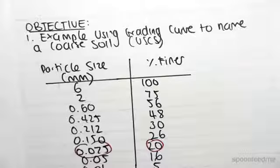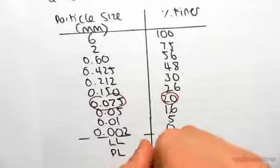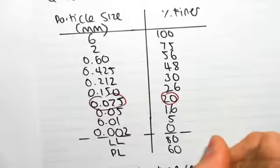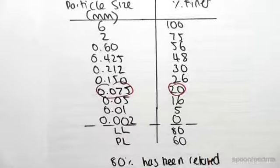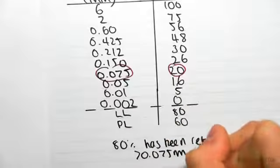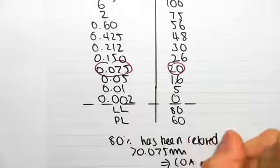So if 20 percent has passed through, it means 80 percent has been retained. 80 percent of particle sizes greater than 0.075 millimeters has been retained, which tells us we're dealing with coarse material because the majority has particle sizes greater than 0.075 millimeters.